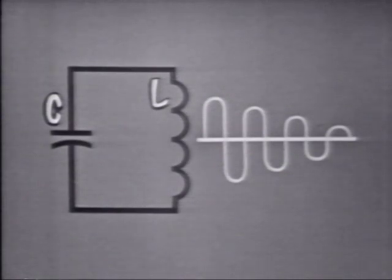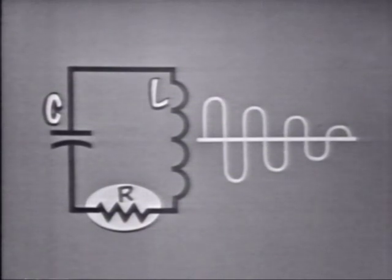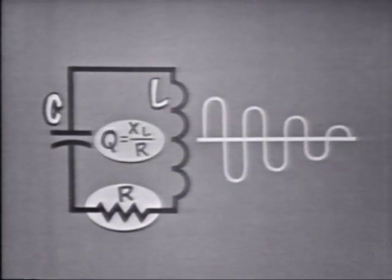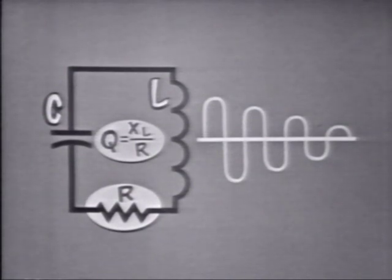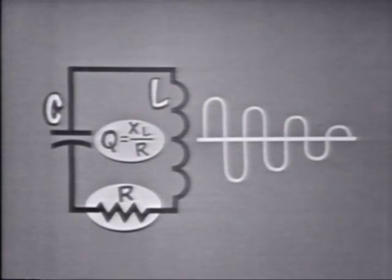The resistance of the wire finally dissipates all of the energy. We'll represent this resistance here. The amount of internal resistance will determine the quality of the circuit, and you should recall that the Q of a coil is equal to X sub L over R.